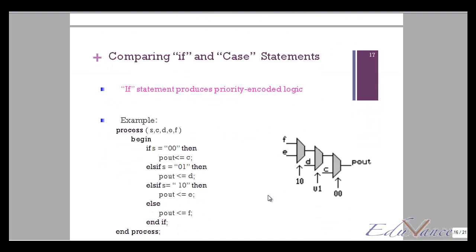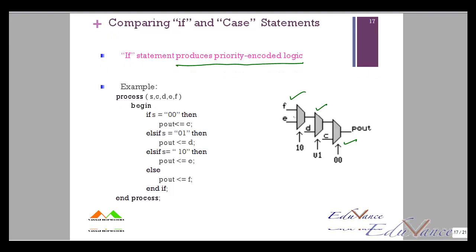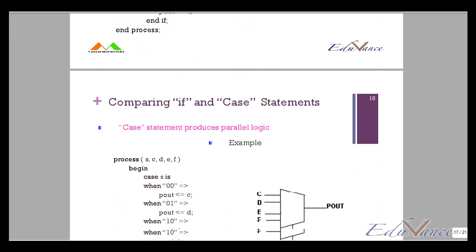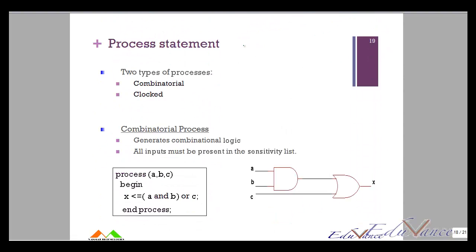The fundamental difference between if and case: the if statement produces priority-encoded logic where one condition has higher priority over others, while the case statement produces parallel logic where all choices are evaluated in parallel. So if you want to make a multiplexer, use a case statement.